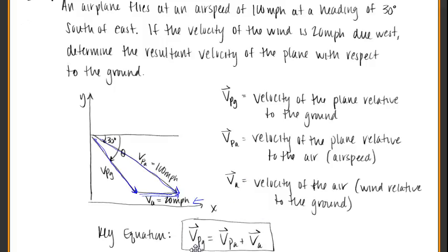Our key equation is that the velocity of the plane relative to the ground is made up of two components: the velocity of the plane relative to the air and the velocity of the air itself. So we've got to break this all down and then we can find our answer.